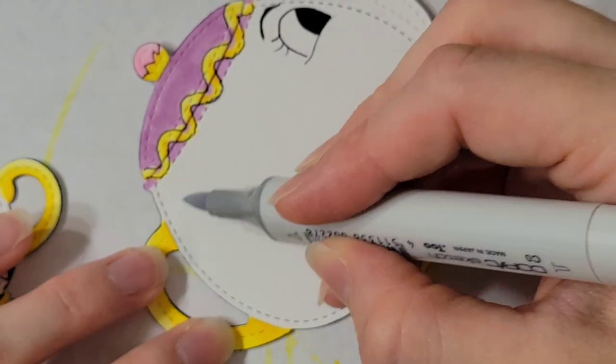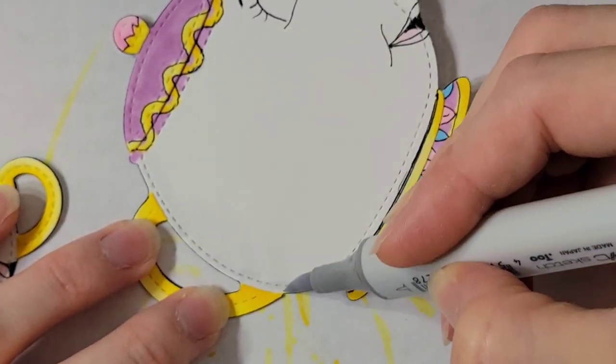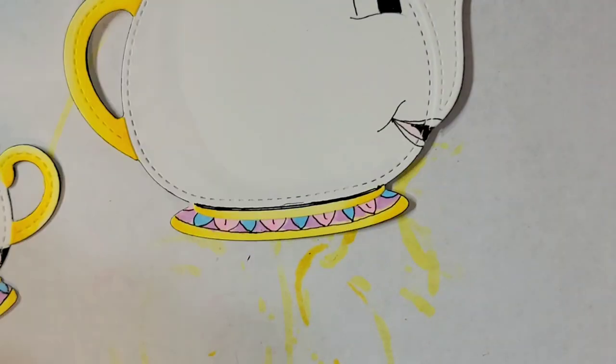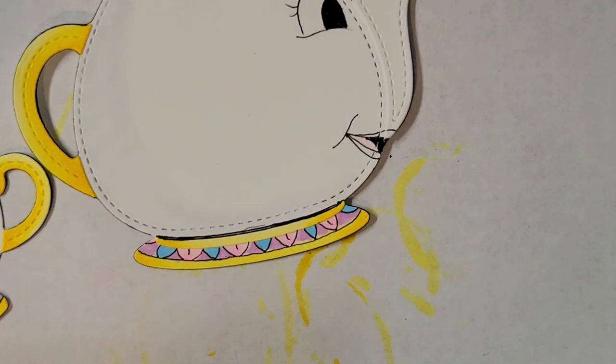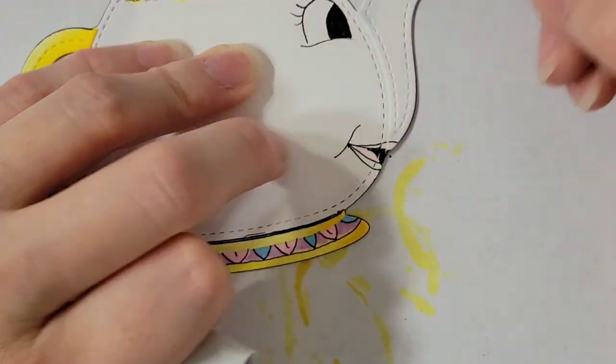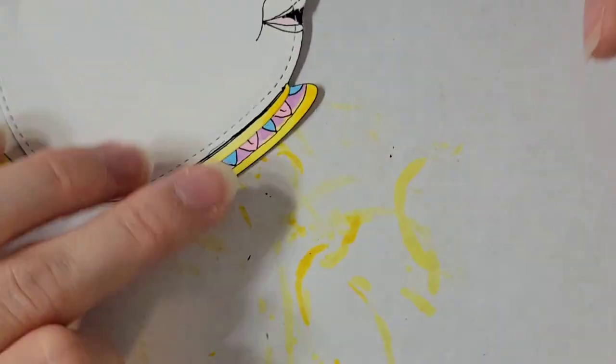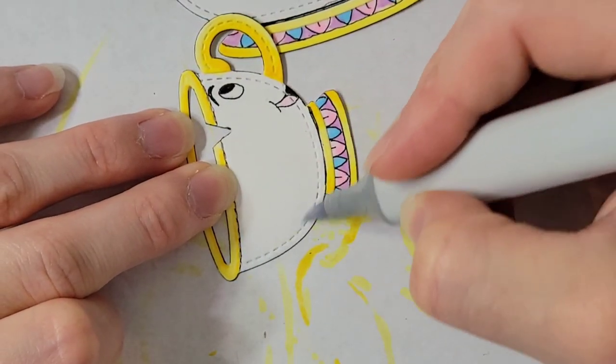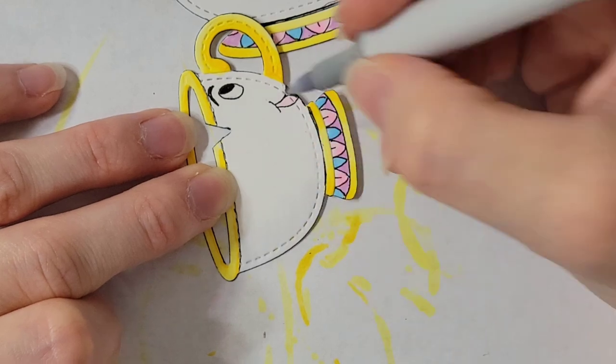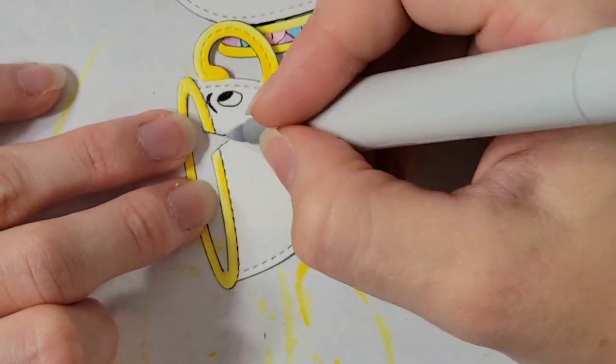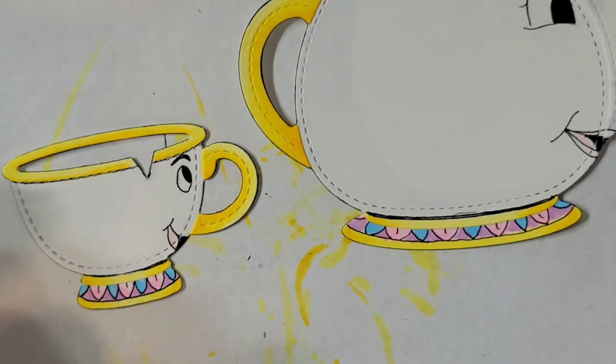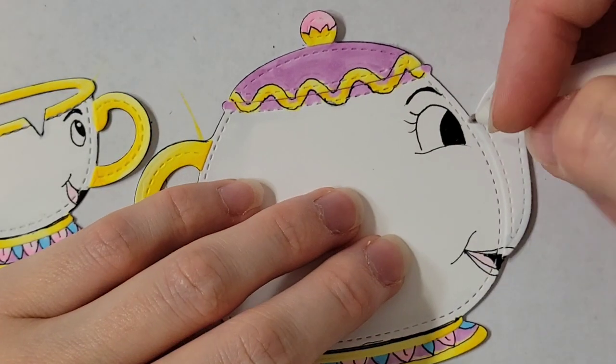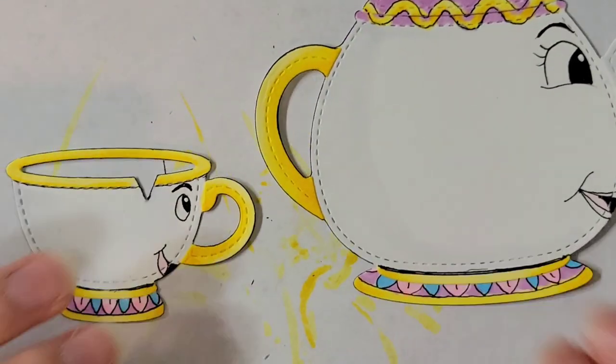Now here I'm just taking one of my grays and I'm just giving some light shading. Again, this isn't super detailed or a lot of blending going on here. It was more just so it didn't look so flat. Now here's where I'm taking my Jelly Roll in size 10 and I'm adding the little highlights to the eyes.